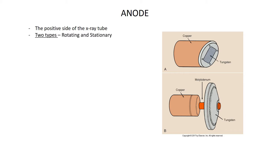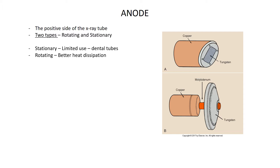There are two types of anodes: rotating anodes and stationary anodes. Stationary anodes have very limited use — today they're primarily used in dental x-ray tubes. Rotating anodes are used in almost all areas of radiography, because of better heat distribution or dissipation.